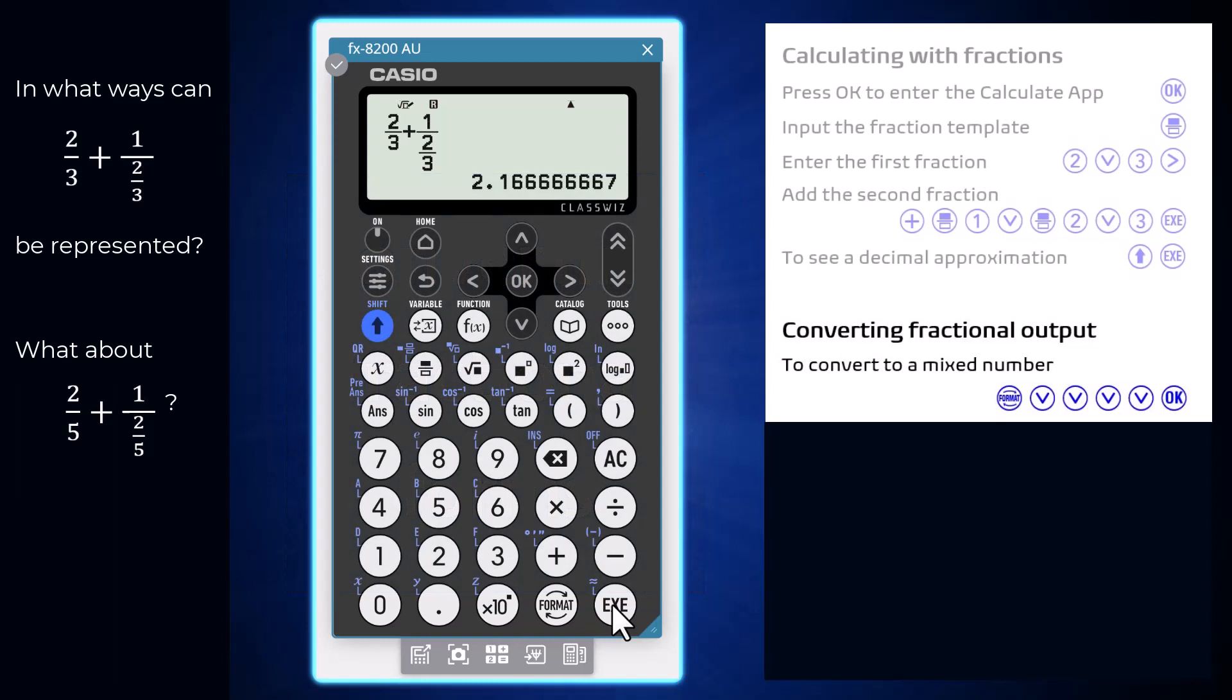To see what other forms this output could take, we can use the format key. Press it and then arrow down to make your selection. Standard will return it to the default exact output and decimal does the same as using the approximately equals key combination.